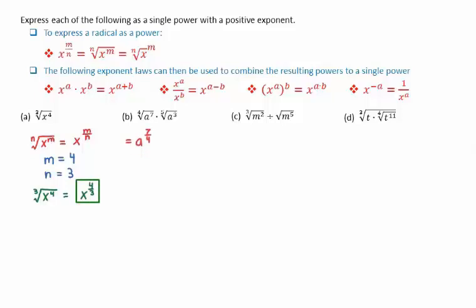For the next one, the fourth root of a to the 7 is a to the 7 over 4. Note the index of the radical is the denominator of the exponent. The fifth root of a to the 3 is simply a to the 3 over 5. We now have to multiply these powers, so we get a common denominator of 20. We multiply 7 over 4 by 5 over 5, and 3 over 5 by 4 over 4, giving a to the 35 over 20 plus 12 over 20, which equals a to the 47 over 20.